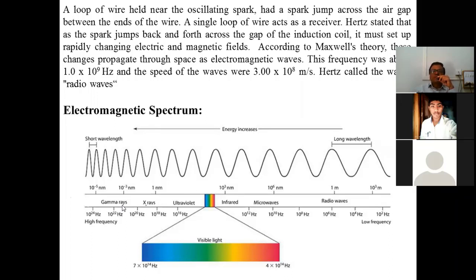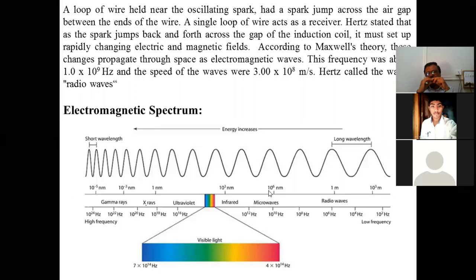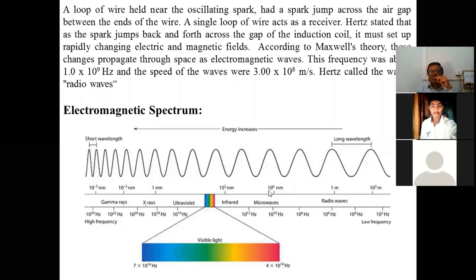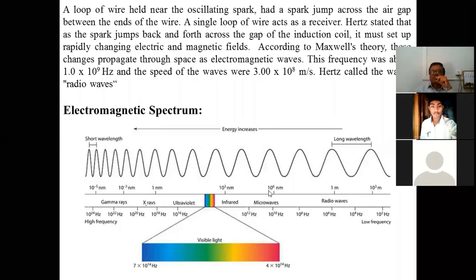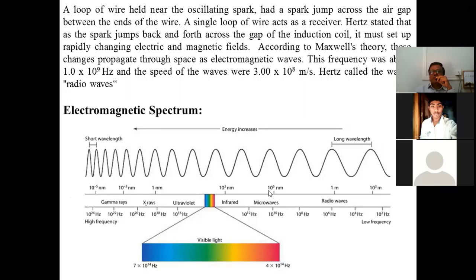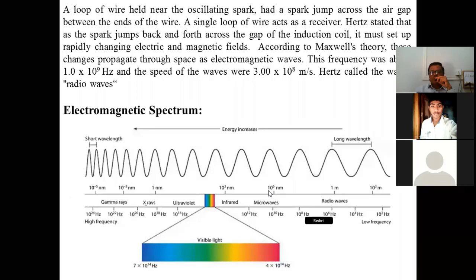There are 7 electromagnetic waves, and among these 7 electromagnetic waves, each has a different wavelength. They have different properties, and according to those properties, they are used in different applications. For example, infrared waves are used for heating applications, ultraviolet waves are used in photography, and X-rays are used in medical treatment.